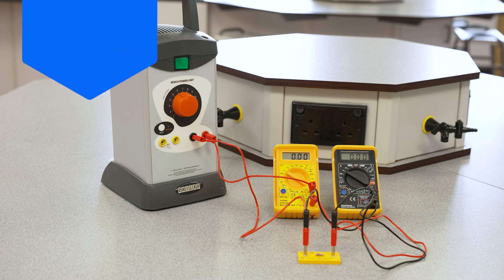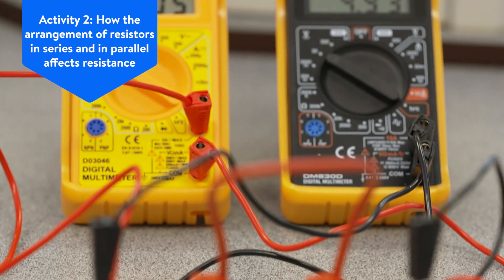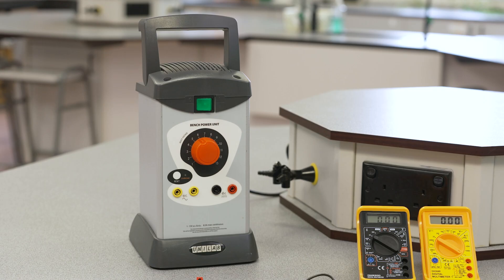The second part of this activity is looking at how the position of resistors in a circuit affects resistance. For this experiment we'll be using a bench power supply, again this time we're using the bench power unit by Unilab.